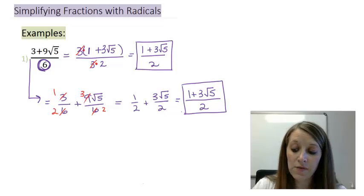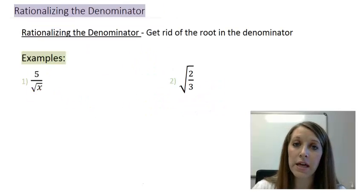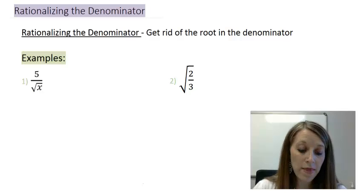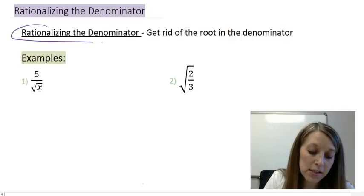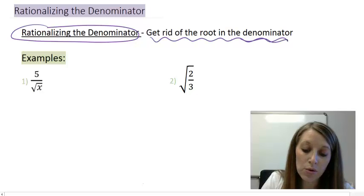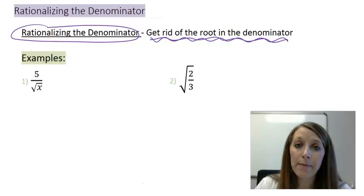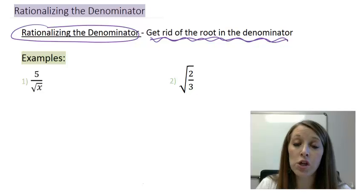Now the rest of this video is going to focus on rationalizing the denominator. And what that means is rationalizing the denominator is to basically eliminate the root in the denominator. So when you get your final answer here, there should absolutely be no more roots in the denominator. Now this doesn't mean that you're actually simplifying the problem. It just means you're manipulating it in a different way.